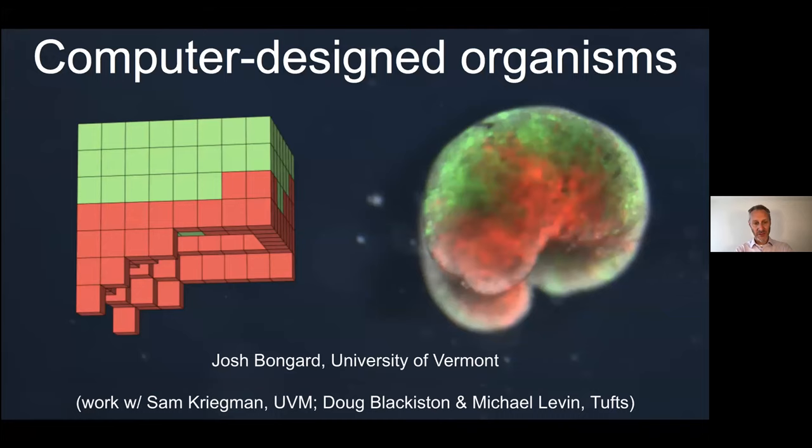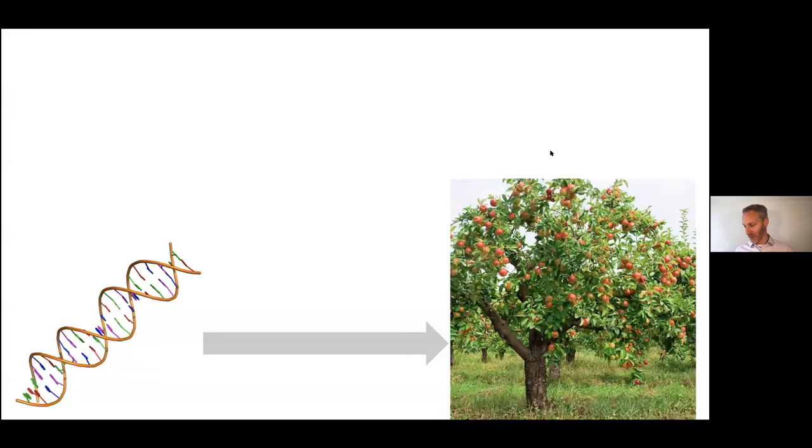I'm a computer science professor at the University of Vermont. This work is carried out with my PhD student Sam Kriegman, and we're collaborating with two biologists, Doug Blackiston and Mike Levin at Tufts. Before discussing computer-designed organisms, I want to start with regular organisms. DNA is the blueprint for life; it dictates how an egg or seed develops into an adult. We're increasingly interested in creating new living systems that don't just embody exaggerated features, but completely new living systems orthogonal to anything in nature.